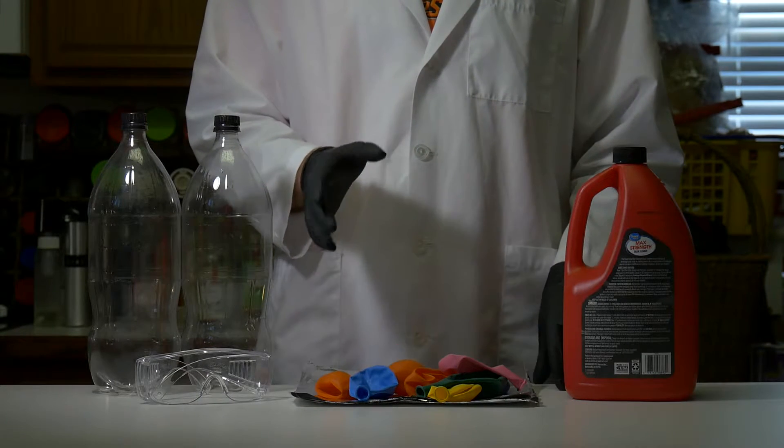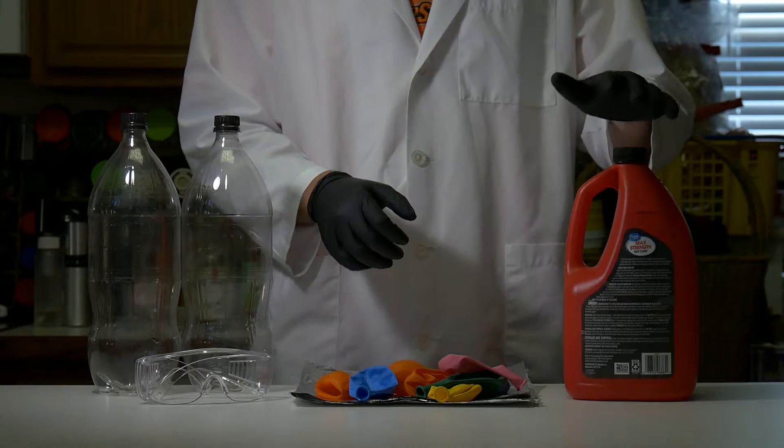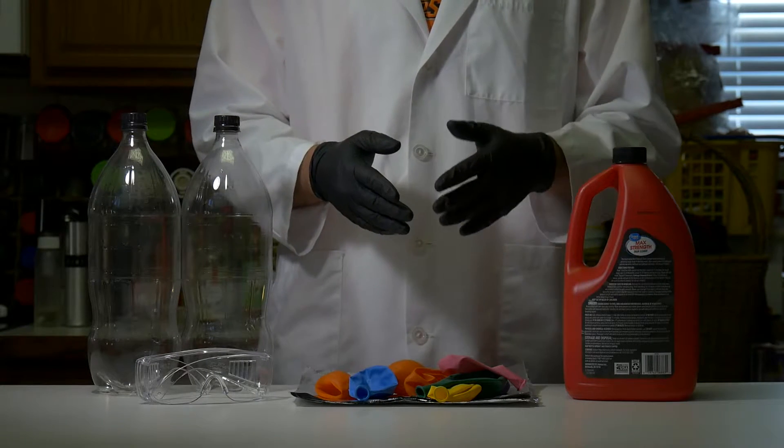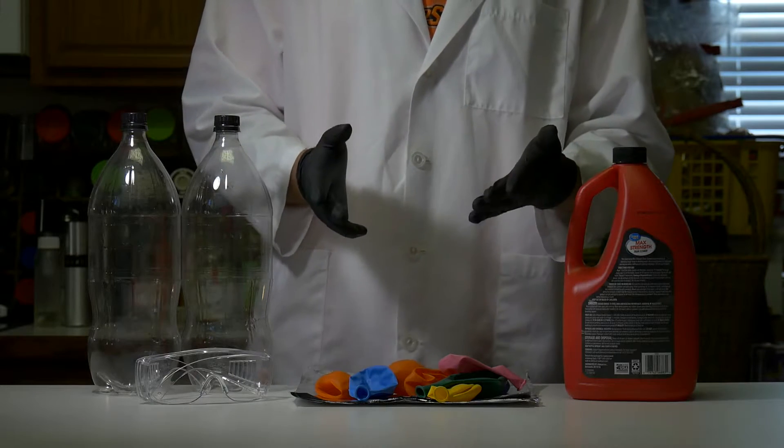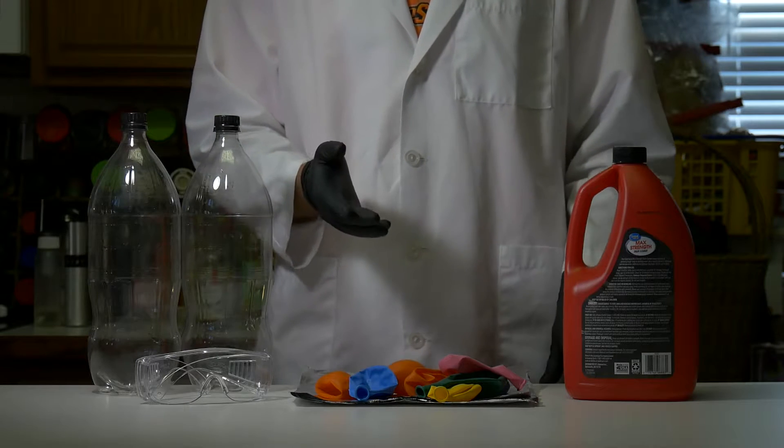This is how we can create hydrogen gas out of common kitchen household supplies. We have Drano here and we have some aluminum foil. The mixture of both of these will produce hydrogen gas, which as most of us probably know is kind of explosive, and so we're gonna go outside, explode some balloons, have a little fun.